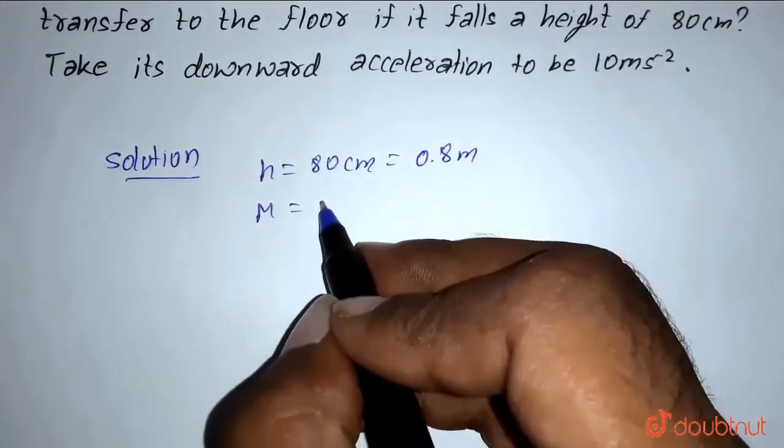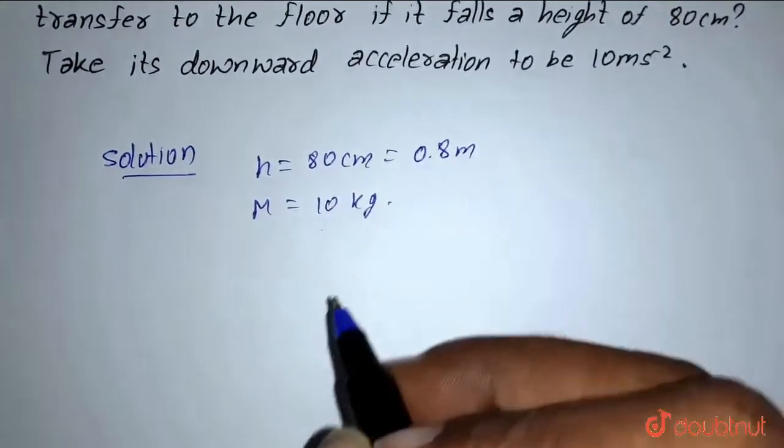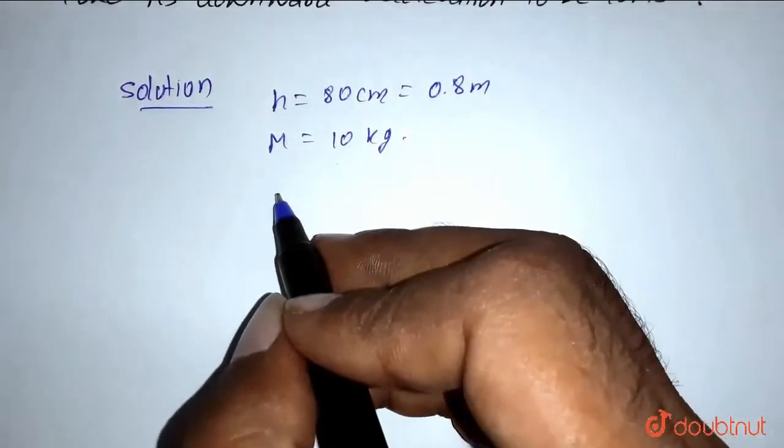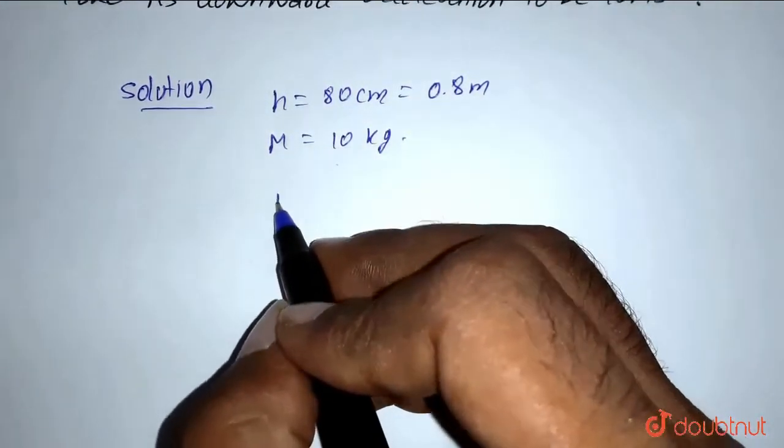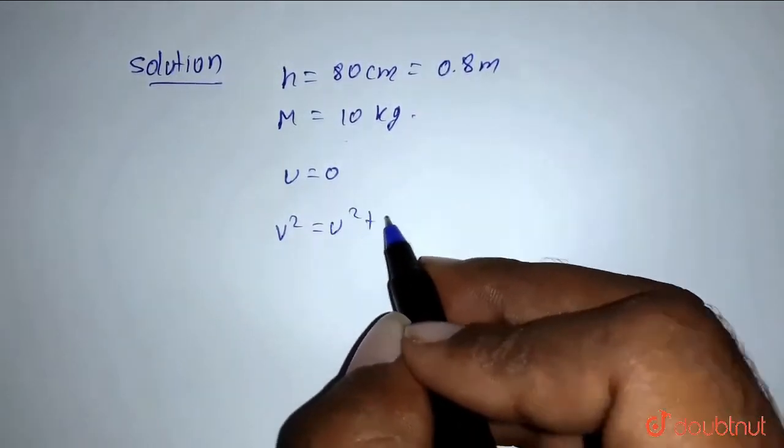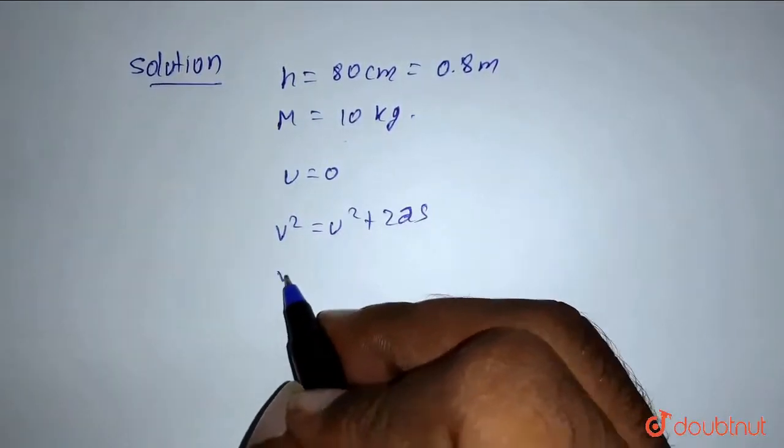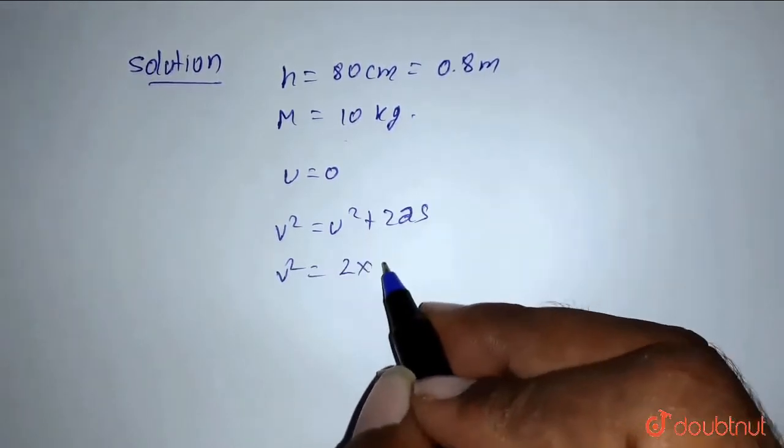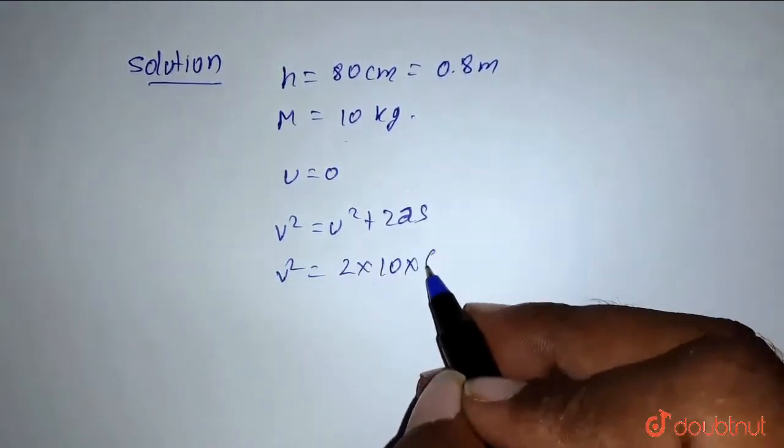Mass of the dumbbell is 10 kilograms. Since we know it is falling from the highest point, so u equals to 0. From v² = u² + 2as, v² is equal to 2 into a is 10, s is 0.8.